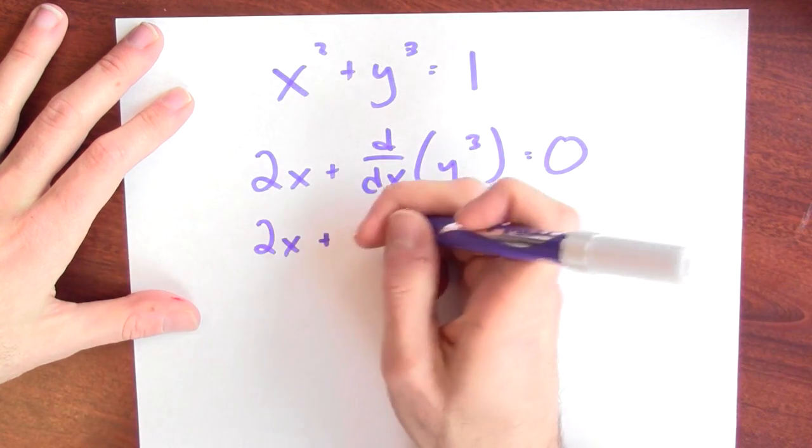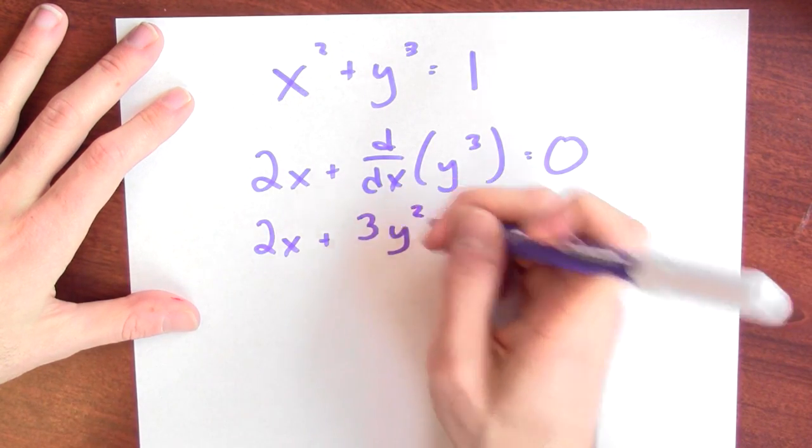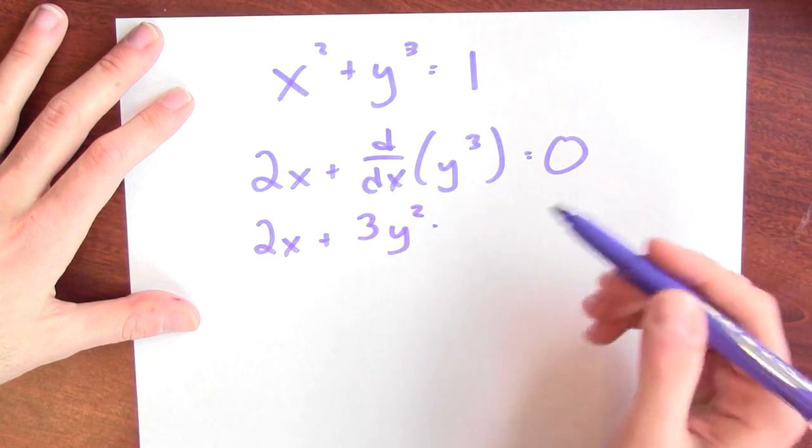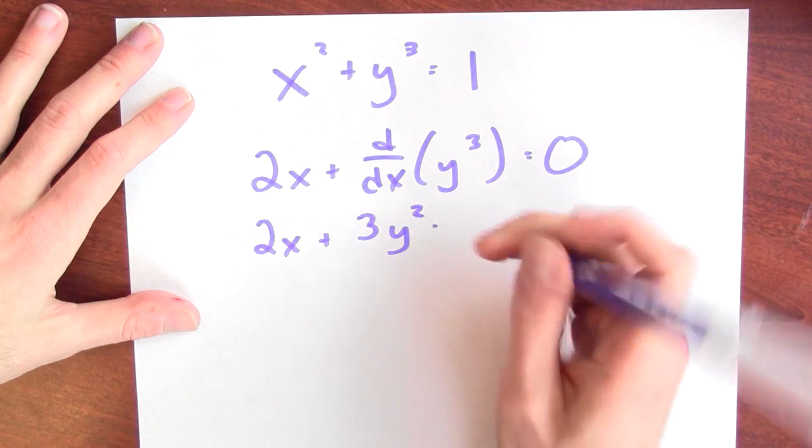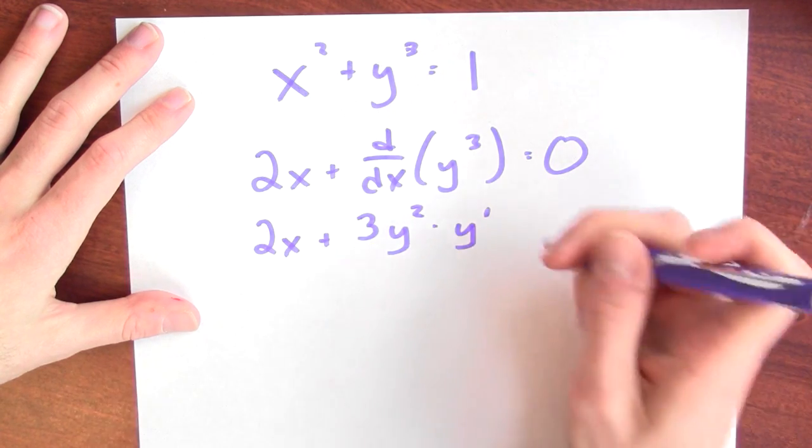you've got to use the chain rule. It's 3 times the inside function squared, that's the derivative of the third power function, times the derivative of the inside function. I'll just write y prime.